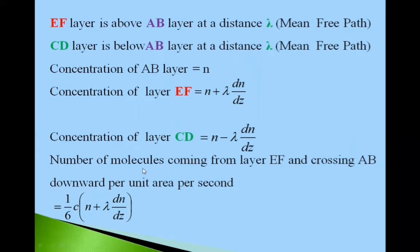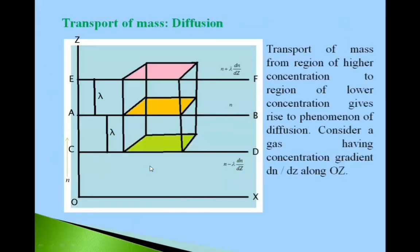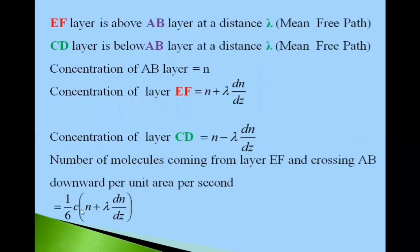Now number of molecules coming from layer EF and crossing AB per unit area per second, the number of molecules from EF layer crossing AB in downward direction per unit area per second is given by 1 upon 6 into C into N plus lambda dN by dz.